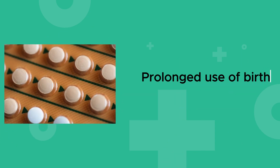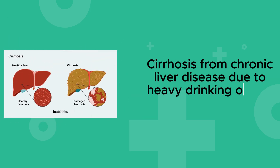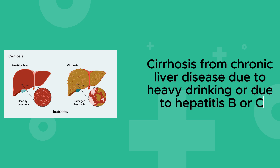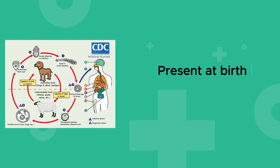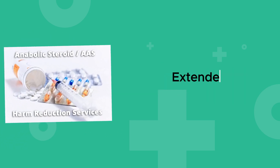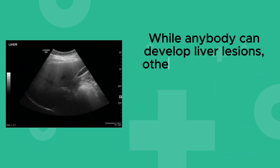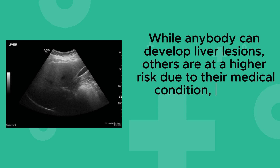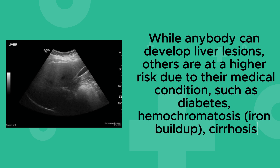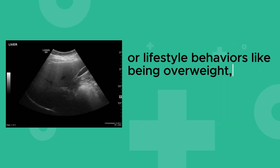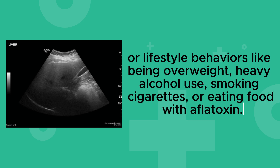Some possible causes of liver lesions include prolonged use of birth control pills, smoking, cirrhosis from chronic liver disease due to heavy drinking or hepatitis B or C, malformation of the liver, genetic mutations, present at birth or after an echinococcus infection, and extended use of anabolic steroids. While anybody can develop liver lesions, others are at higher risk due to conditions such as diabetes, hemochromatosis, iron buildup, or cirrhosis, or lifestyle behaviors like being overweight, heavy alcohol use, smoking cigarettes, or eating food with aflatoxin.